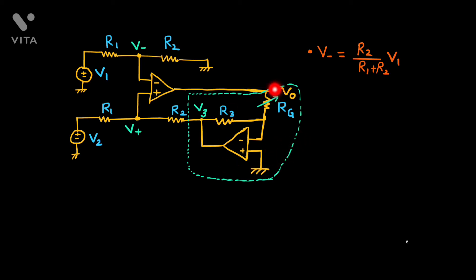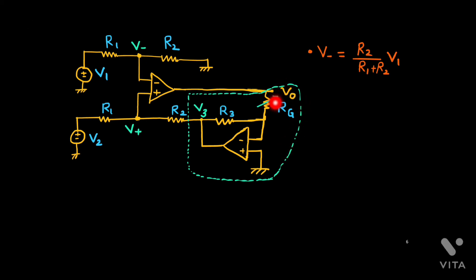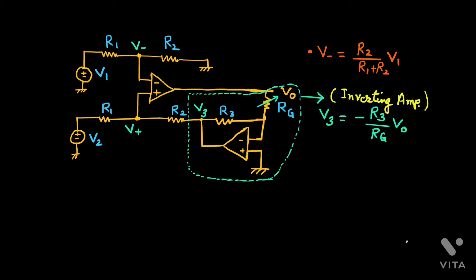Now consider this part: the output is connected to this op-amp at the inverting terminal through R2, and there is a feedback resistance R3. This is essentially an inverting amplifier where output is connected back to the input side, and V3 is the corresponding output. The gain is minus RF over R1, which in this case is minus R3 over RG. Therefore V3 equals minus R3 over RG, times V0.